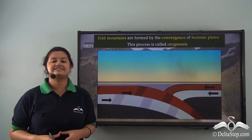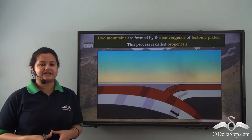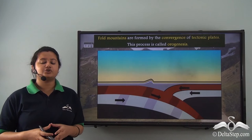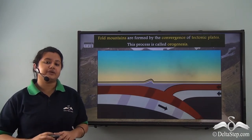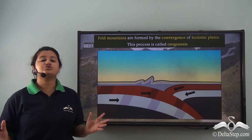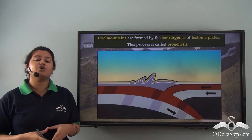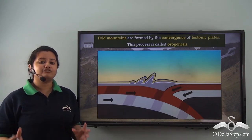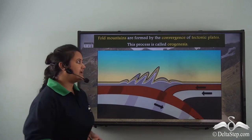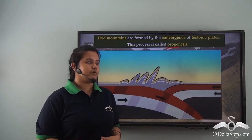Let us clearly understand how fold mountains are formed. When two shoe boxes are moved closer to one another, the towel placed between them crumbles and gets uplifted. Similarly, when two tectonic plates converge, the overlying crustal layers crumble and form a fold mountain. This process is known as orogenesis — the process by which fold mountains are formed.